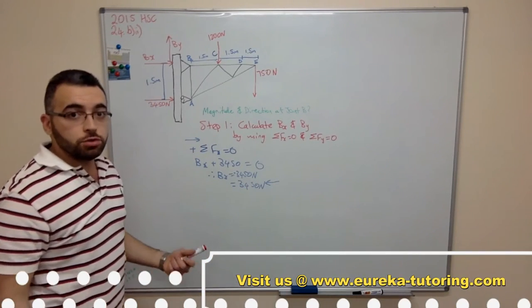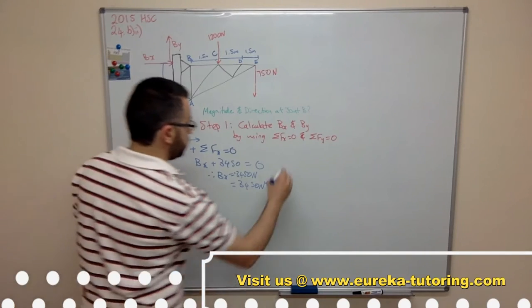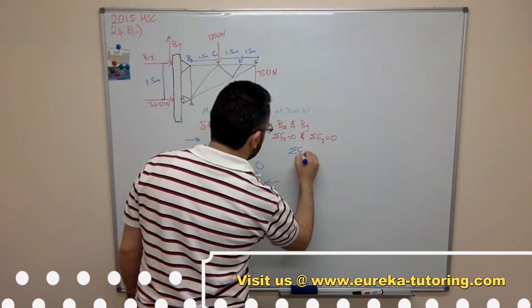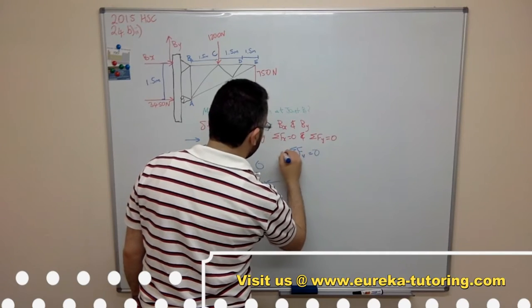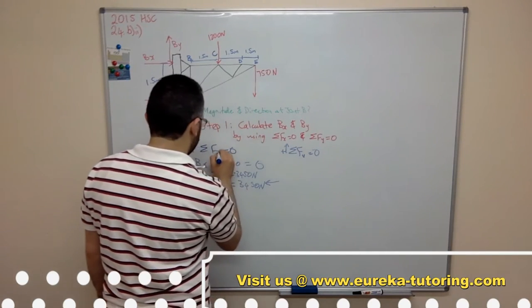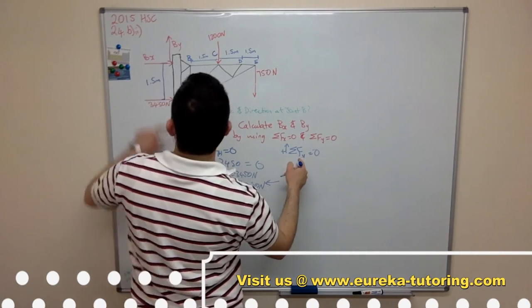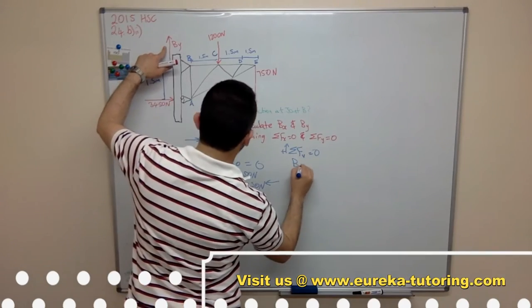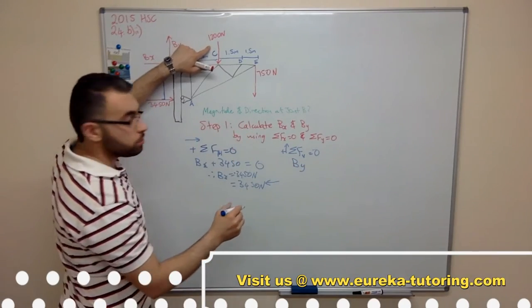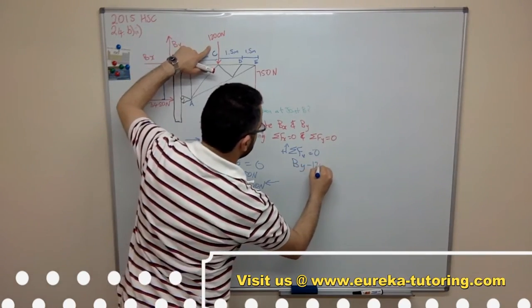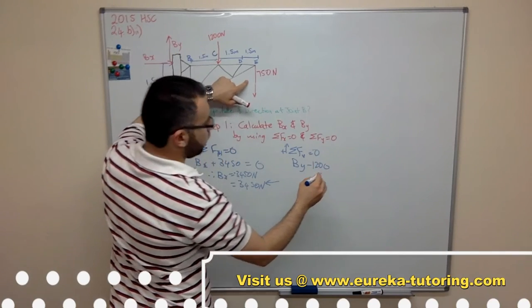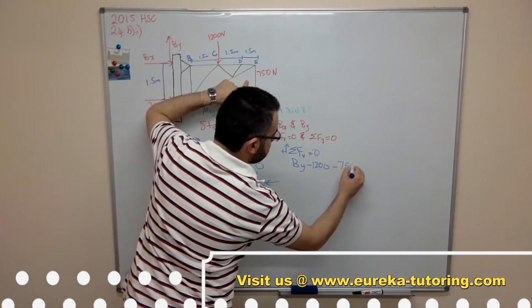Now the next step is doing sum of forces in the vertical direction. So sum of forces in the vertical direction equals 0. So we have By, we have minus 1200 as it is going down, and we have minus 750 equals 0.